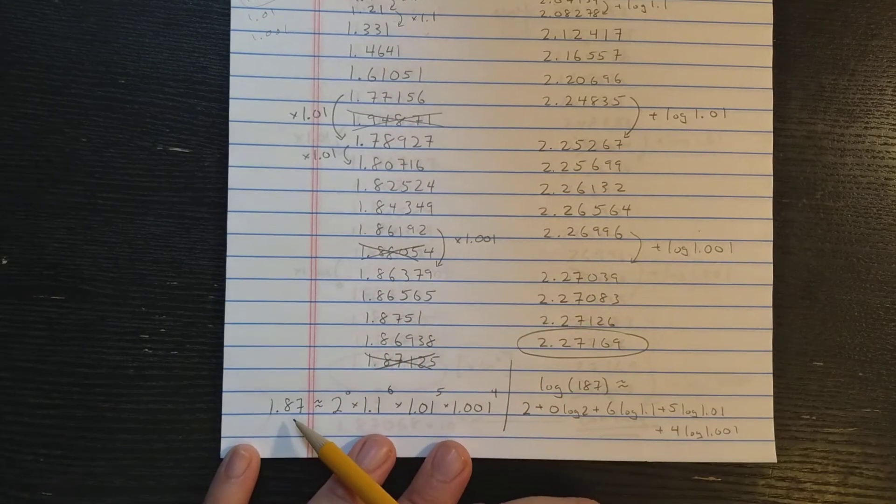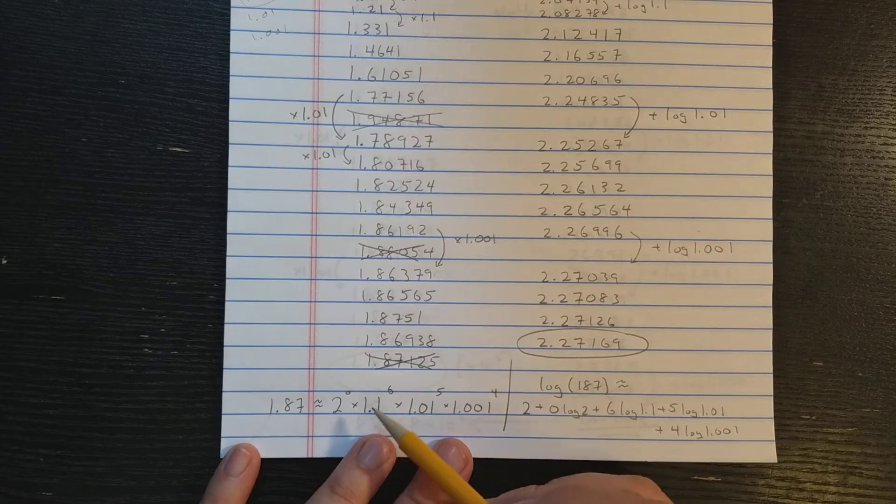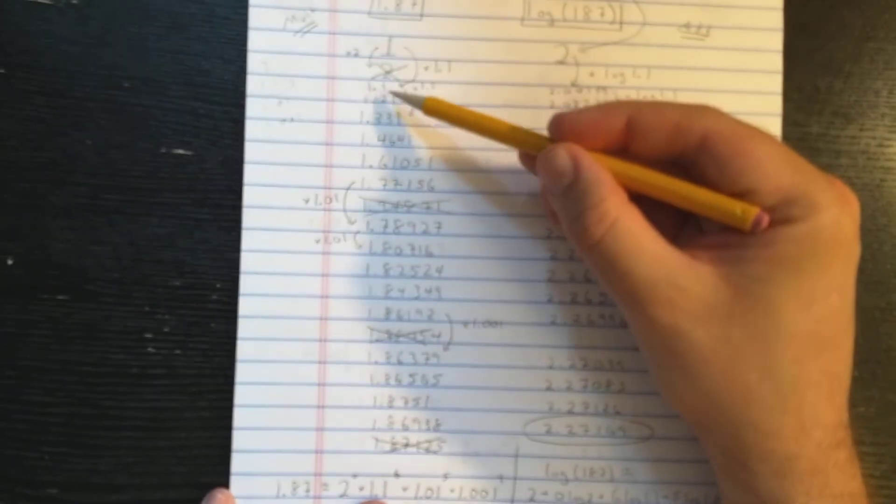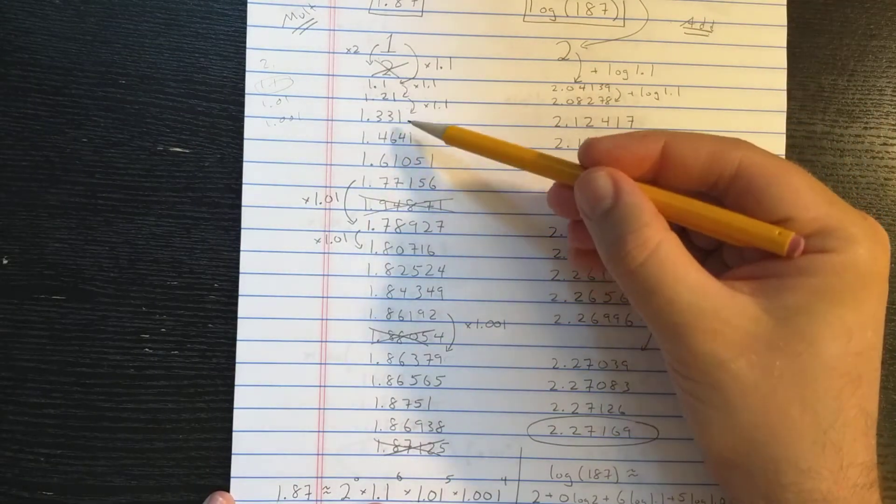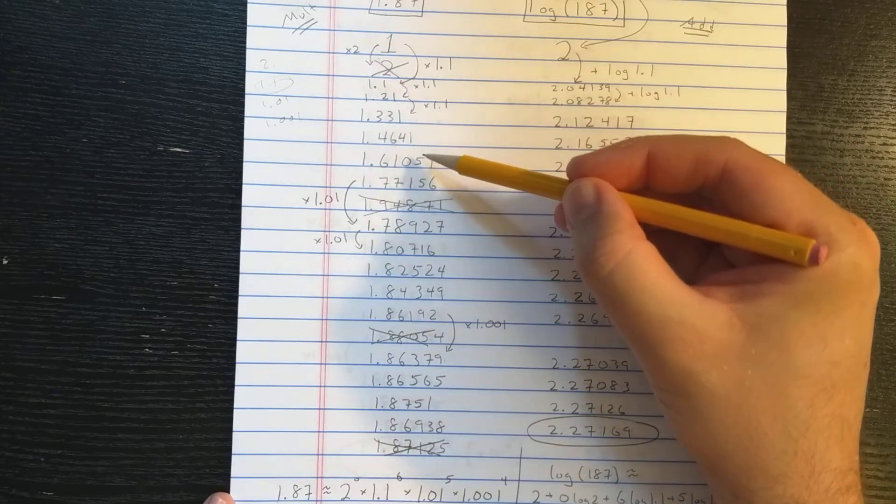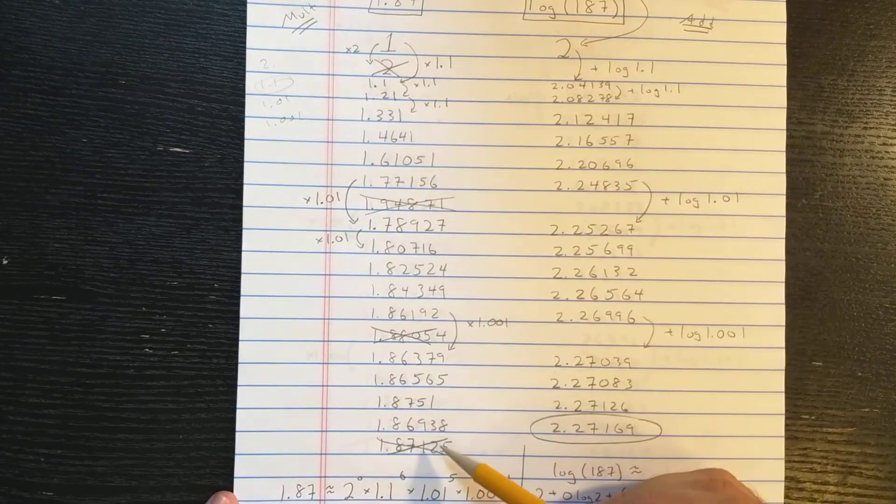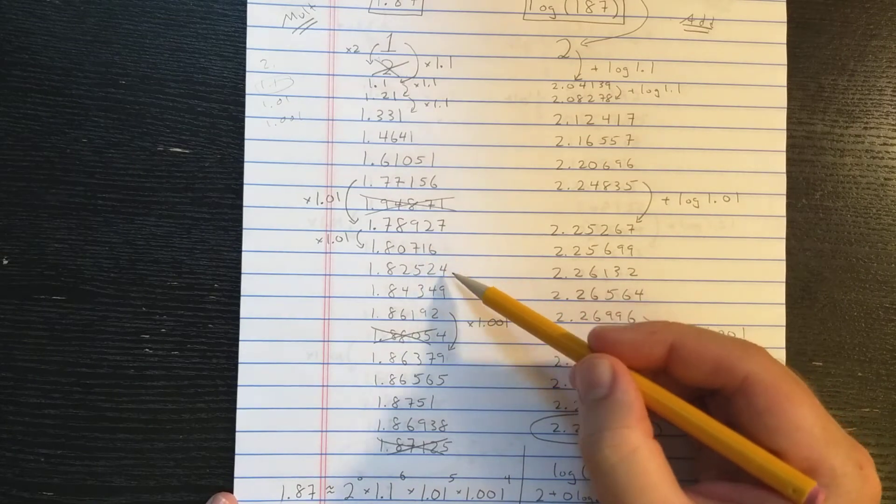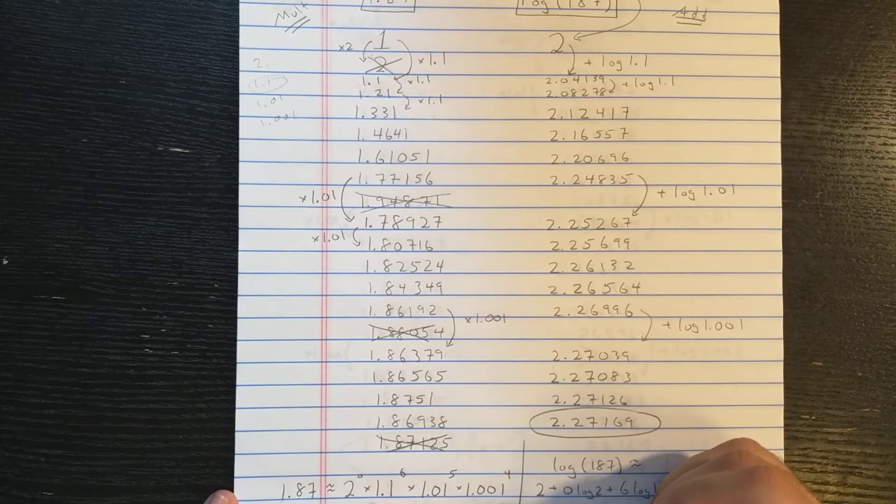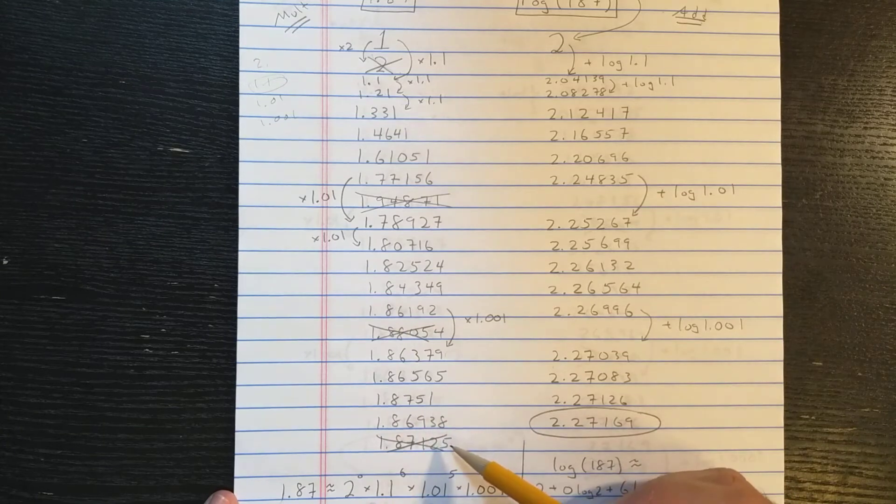So the idea here is what I've determined is that 1.881 is 2 to the 0. That 0 is because I couldn't multiply by 2 even once before going over. Then times 1.1 to the 6. That's because I had 6 1.1 multiplications. 1.01 to the 5 for the 5 1.01 multiplications. And 1.001 to the 4 for those 4.